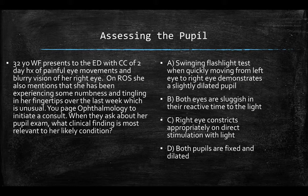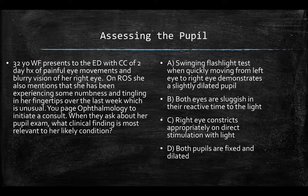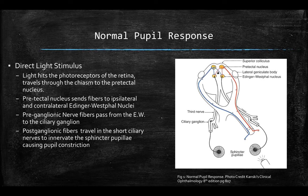Take a moment to read over the answers, pause the video and think about it. If you chose answer A, you chose the correct response. The swinging flashlight test, when moving quickly from the left eye to the right eye, demonstrates a slightly dilated pupil — we're going to go over this in just a moment. The other answers are inappropriate: both eyes sluggish in reactive time to light can have many causes; the right eye constricting to direct light stimulation is a normal response; both pupils fixed and dilated can be a sign of a brainstem lesion.